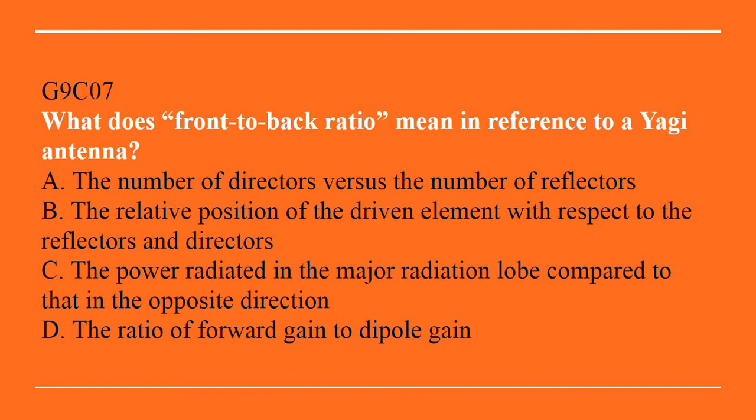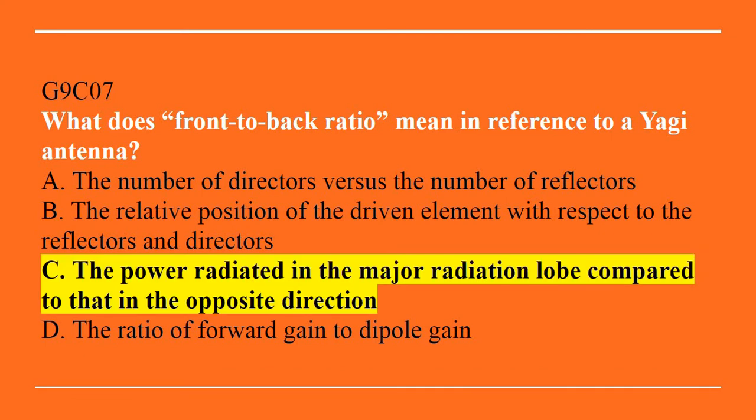G9C07: What does front-to-back ratio mean in reference to a Yagi antenna? A. The number of directors versus the number of reflectors. B. The relative position of the driven element with respect to the reflectors or directors. C. The power radiated in the major radiation lobe compared to that in the opposite direction. Or D. The ratio of forward gain to dipole gain. The answer is C — the power radiated in the major radiation lobe compared to that in the opposite direction.